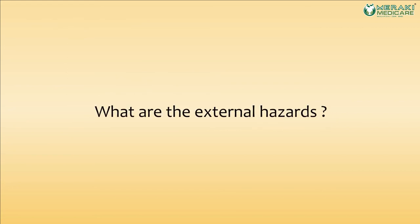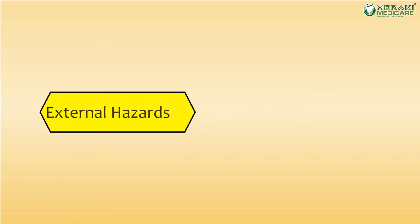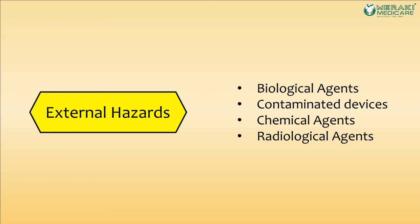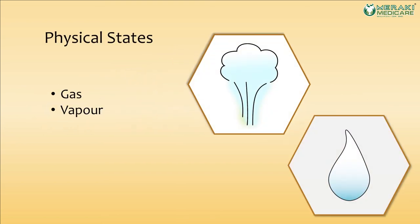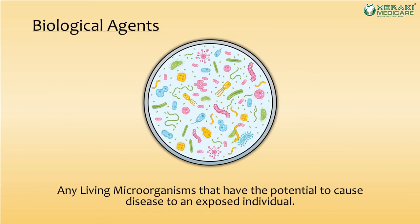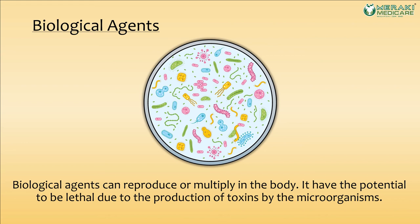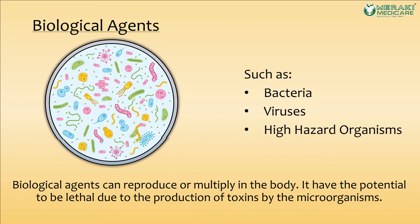PPE is designed to protect against external hazards, which can include biological agents, contaminated devices, chemical agents, or radiological agents. These can be in the form of gas, vapour, aerosol (airborne particles), or liquid. Biological agents are living microorganisms with the potential to cause disease in an exposed individual. They can reproduce or multiply in the body and may be lethal due to toxin production. These include bacteria, viruses, or high-hazard organisms — contagious microorganisms with the potential to cause an outbreak, illness, or death.